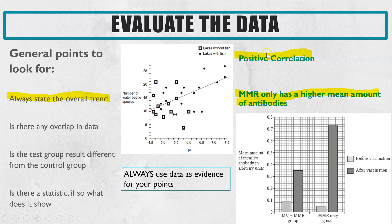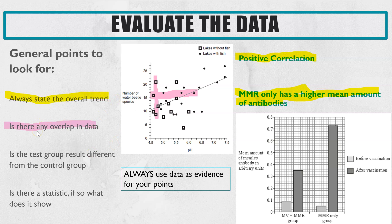When evaluating the data, mark number one is always stating the overall trend, and you should always use data as evidence for your points. For a positive correlation, you should use the labels on the two axes — for example, stating there is a positive correlation between pH and the number of water beetle species. General point number two is: is there any overlap in the data? I've highlighted this on the scatter graph — at 16 water beetles we have multiple data points for different pHs, and for the same pH we have variation in beetle numbers. Those overlaps go against the positive correlation.